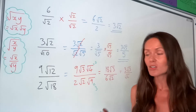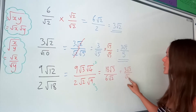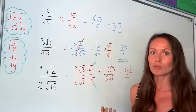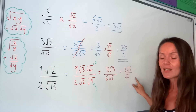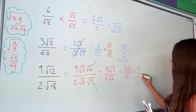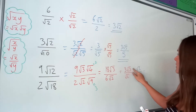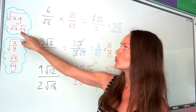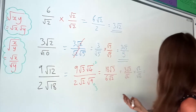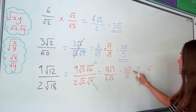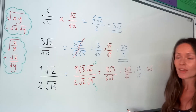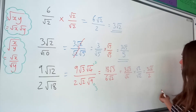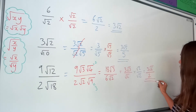We still haven't finished because there's a square root on the denominator. Just like in the first question, we multiply by √2 on the top and also underneath. On the numerator, 3√3 times √2 gives 3√6, since root 3 times root 2 can be written as root 6. Underneath, √2 times √2 is 2. We can't simplify 3√6 over 2, so that is the final answer.